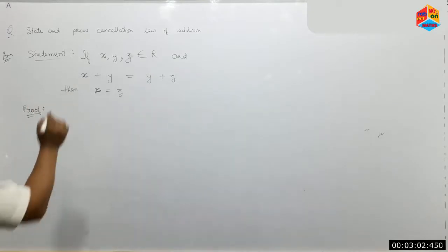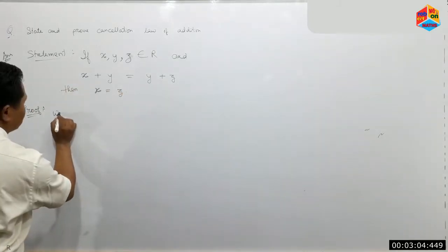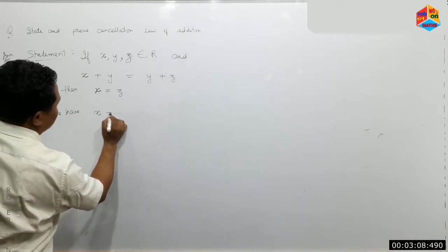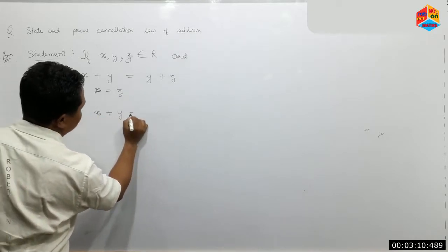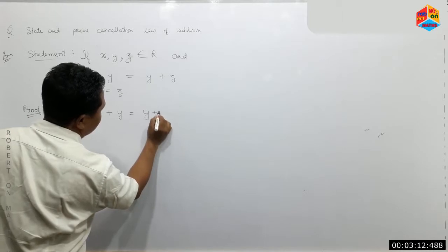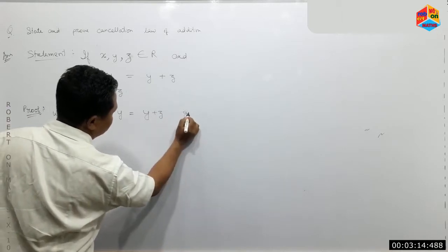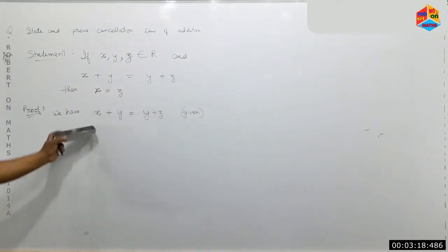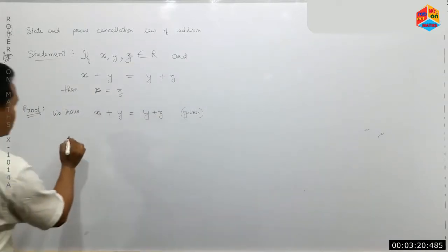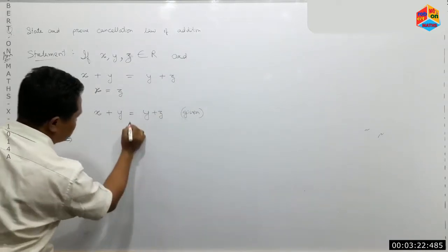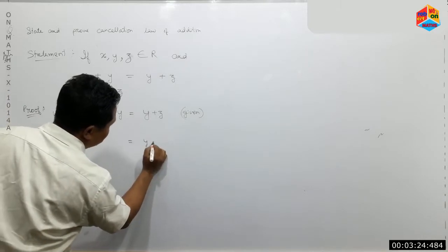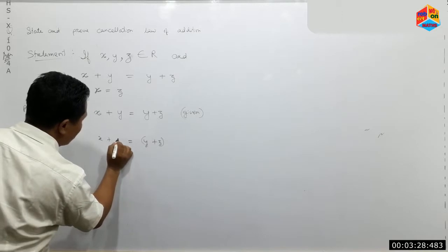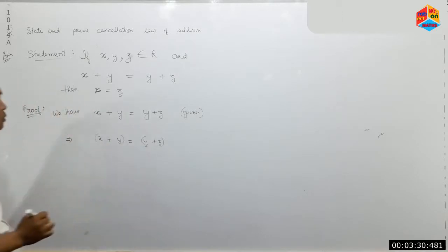For the proof, we are given that x plus y is equal to x plus z. These are three different real number values.